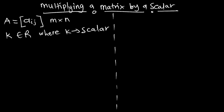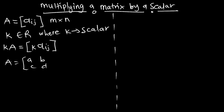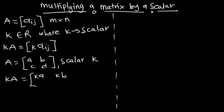So, multiplying K by the matrix A is the same thing as multiplying K by the matrix Aij. Very simple. In other words, if we have matrix A as A, B, C, D, and we have our scalar as K, which can be any real number, K multiplying by our matrix A means you multiply the scalar by all the members.